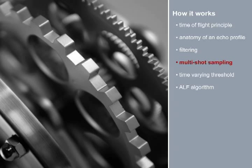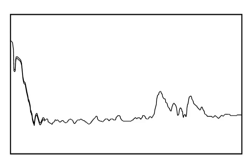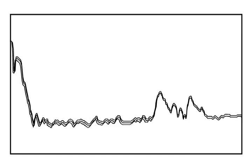Multi-shot sampling. The typical echo profile is not the result of one pulse. It is the average of a number of pulses. This is called multi-shot sampling. Each device has a different default value for the number of pulses or shots that it takes before processing the final echo profile.